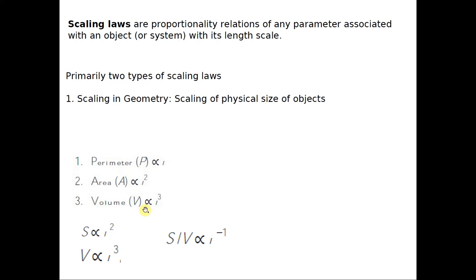Perimeter, area and volume are all directly proportional — but with different factors: proportional to L, L squared, and L cubed respectively. Now we have a very important relation: surface-to-volume ratio. Surface area is proportional to L squared, and volume is proportional to L cubed. So the ratio of surface area to volume gives L squared over L cubed, which is 1 over L, or L to the power of minus 1 — an inverse relation.